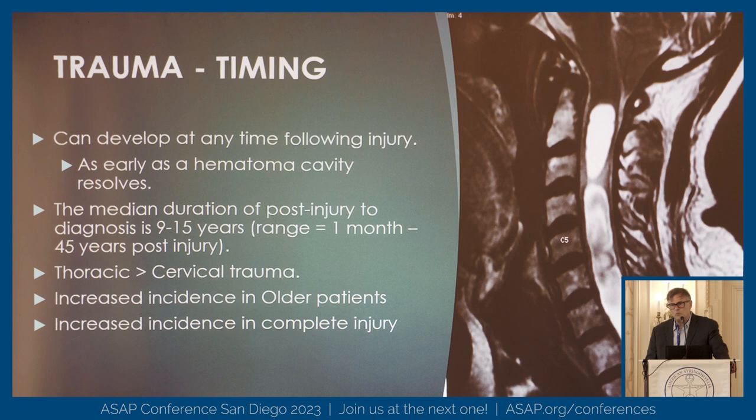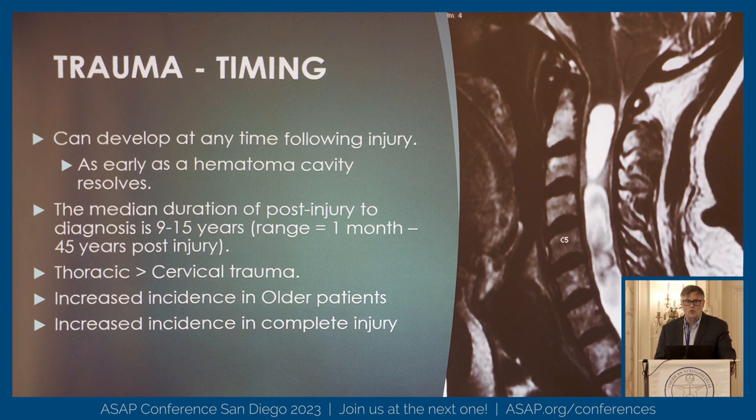Where the trauma occurs matters — thoracic injuries tend to be associated more often with syrinxes than cervical injuries. The incidence of syrinx is higher in older patients and obviously higher when you have a complete injury of the spinal cord, whether it be a section or transection of the cord or diffuse vascular injury that creates a paraplegia or quadriplegia.